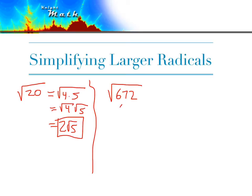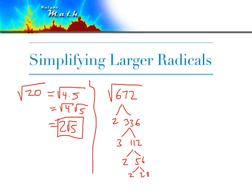Or we can factor this into prime factors using a factor tree. So 672 is 2 times 336. We can see that 336 is divisible by 3, giving us 112. Then we break that into 2 times 56, and we've got another 2 giving us 28.